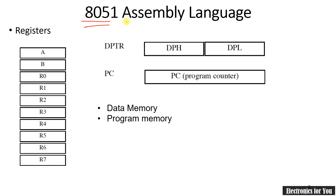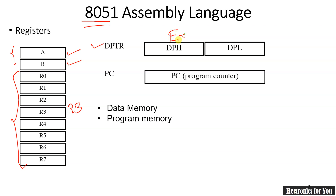Let us see what is available in 8051 for use in assembly language programs. Two general purpose registers A and B are directly used for instructions. Some other registers are also available, known as R0 to R7. These are also general purpose registers, but their selection depends on the register banks. Two more registers are used: DPTR, which is used for external RAM, and PC (program counter), which is used for program memory.